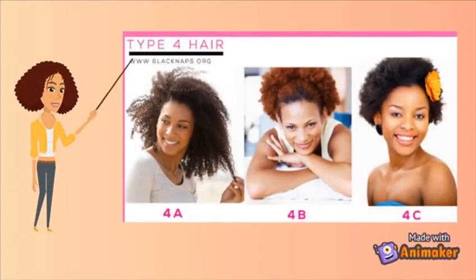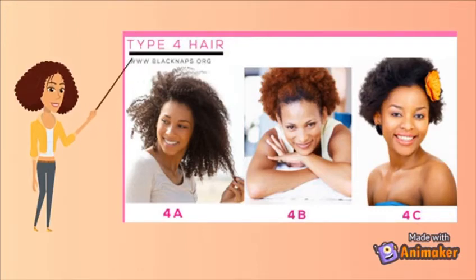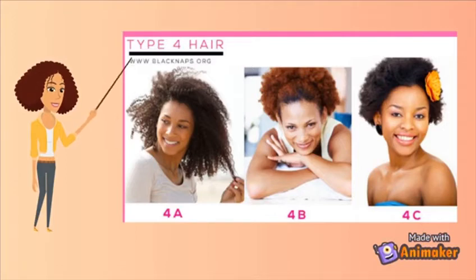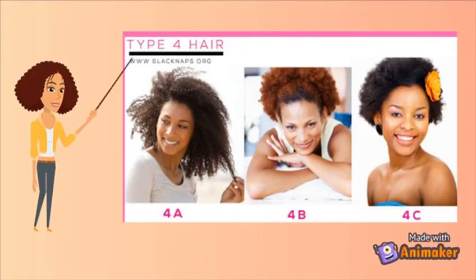The fourth and final curl type is Type 4 hair, which can be broken down into 4a, 4b, and 4c. Type 4 hair is considered kinky or coily hair — the tightest of all the hair types. Starting with Type 4a, looking at the diagram we can see it has tight S-shaped curls. This differs from Type 3a simply because it has smaller S-shaped curls instead of large ones.